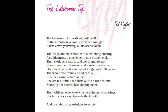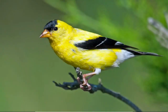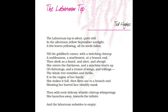In the next stanza, the poet says: 'Till the goldfinch comes with a twitching cherub suddenness, a startlement at a branch end.' Suddenly a goldfinch, a small bird, comes there and surprises us by landing on a branch end, making a twitching sound. It is a small bird with yellow feathers — you can see the yellow feathers and dark spots on its head. The tree is peaceful until the goldfinch comes.